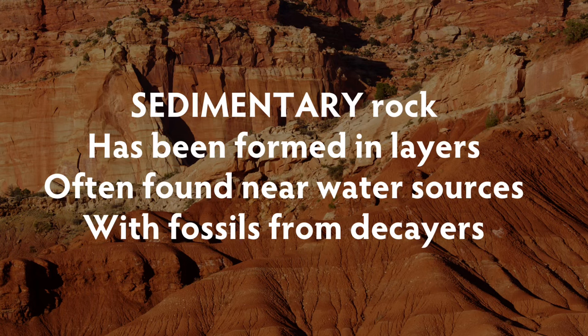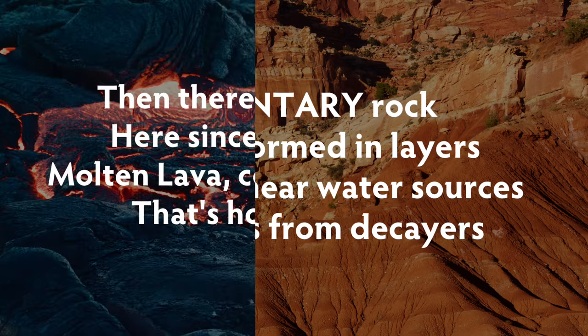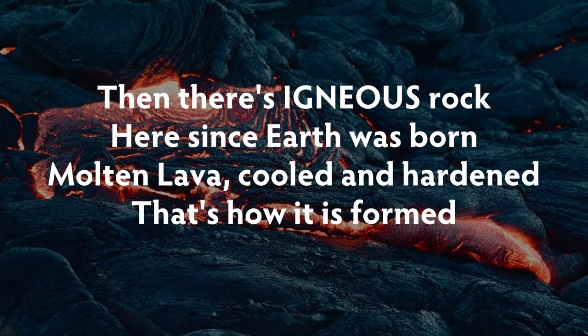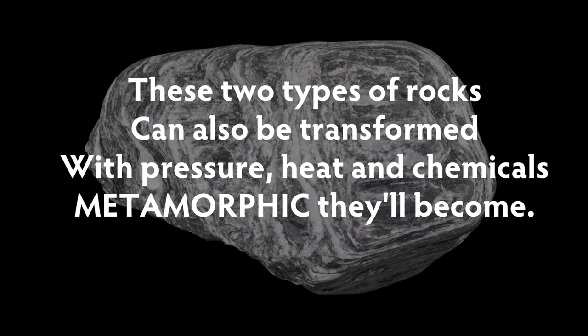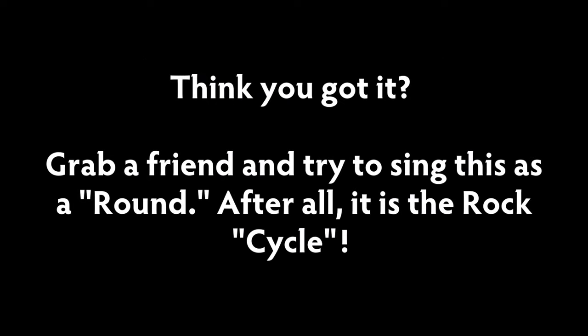Sedimentary rock has been formed in layers, often found near water sources, with fossils from decayers. Then there's igneous rock — here since earth was born, molten lava cooled and hardened, that is how it's formed. These two types of rocks can also be transformed with pressure, heat, and chemicals — metamorphic they'll become.